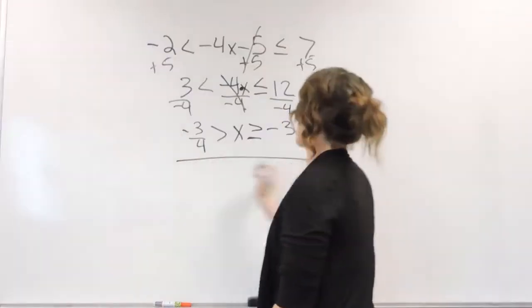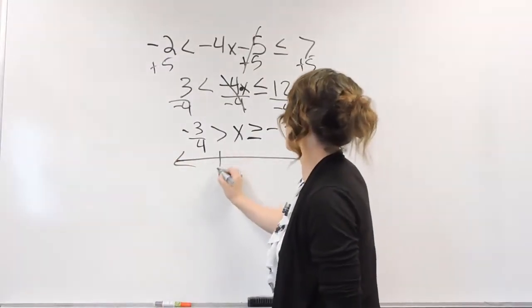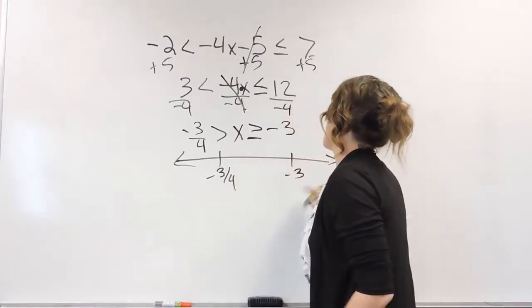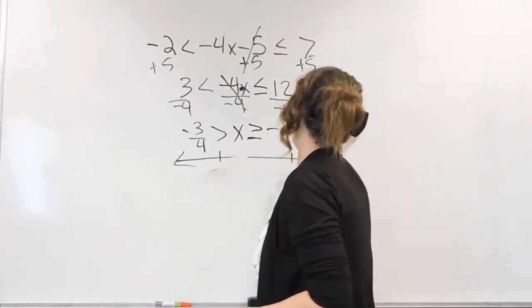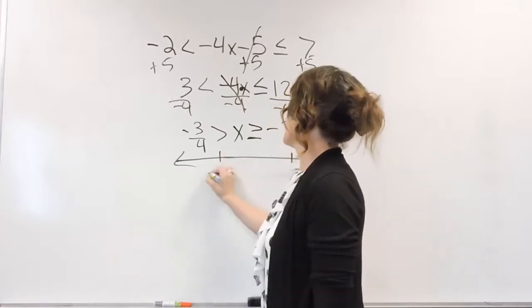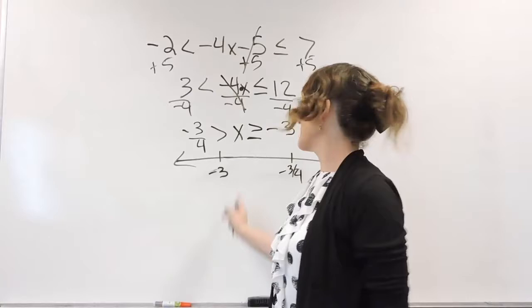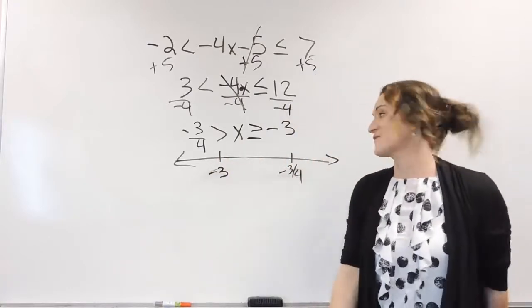Let's go ahead and graph here. So we're concerned with a negative 3 fourths and a negative 3, and I just drew those on opposite directions here. The negative 3 and negative 3 fourths, it should be like that. Negative 3 is definitely smaller than negative 3 fourths.